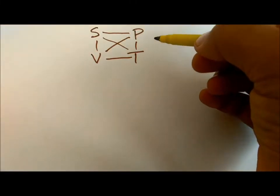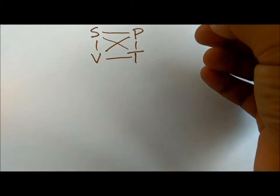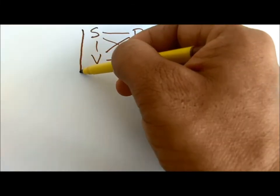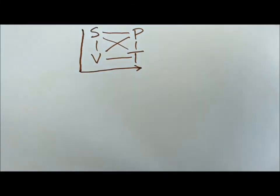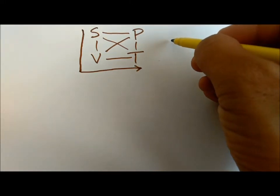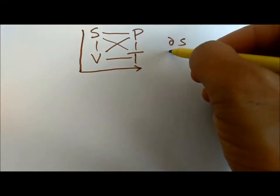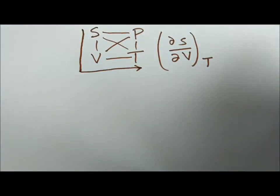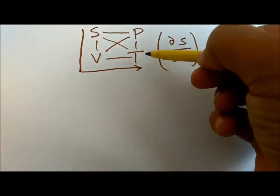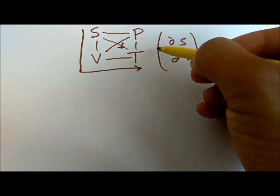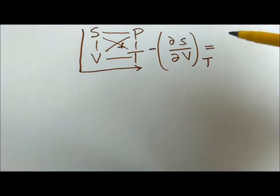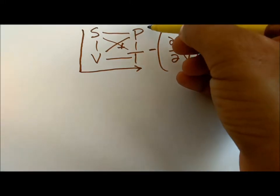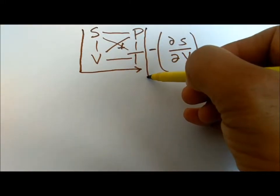Now for the second relation, we start from S. We go from S to T. When we go from S to T it is del S over del V at constant T. When we go from S to T the arrow goes down, so it is with a negative sign. What is left is P, and from P we go backward.